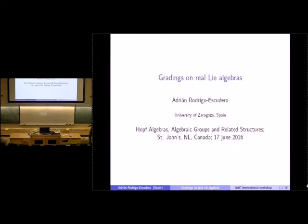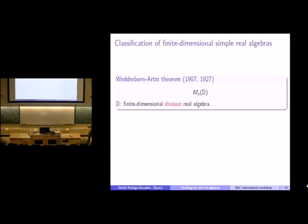I am going to speak about the classification of gradings on finite-dimensional simple real algebras. Let me start by remembering that the finite-dimensional simple real algebras are already classified by two classical theorems. The first is the Wedderburn-Artin theorem, which says that all these algebras are isomorphic to algebras of n by n square matrices over a finite-dimensional division real algebra.